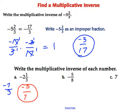Go ahead and try letters B and C and I'll give you the answers when you come back. The multiplicative inverse for letter B would be negative 8 fifths, and the multiplicative inverse for C would be 1 over 7.